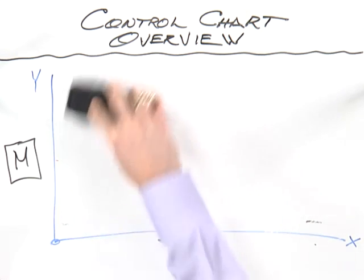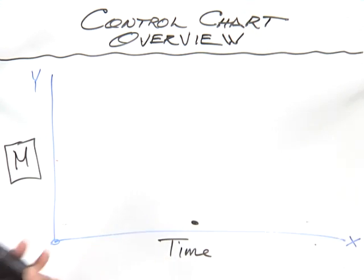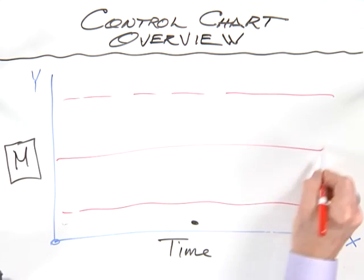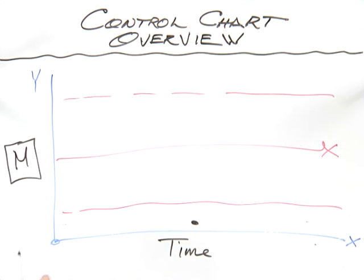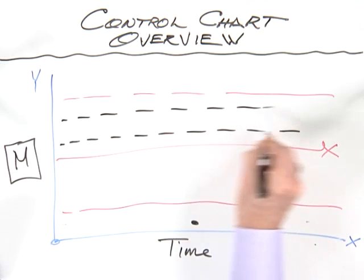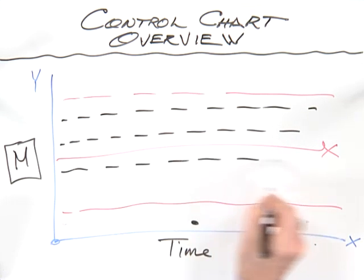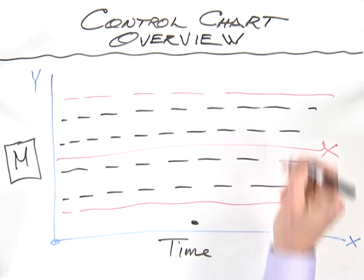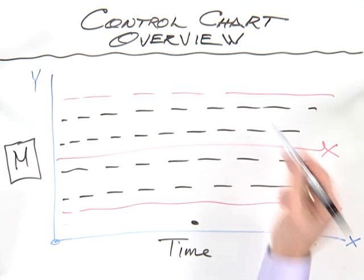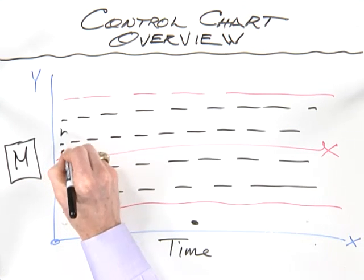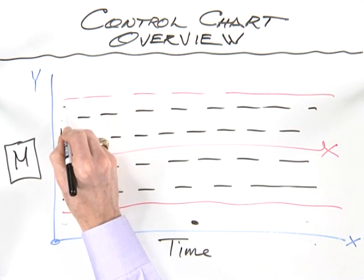We oftentimes will look to see if we have data that form abnormal patterns. We have our upper and lower control limit with our mean, and then we have data that start arraying themselves around these zones. There are two key tests that we look at to understand whether or not data that fall even between the control limits are demonstrating abnormal patterns.